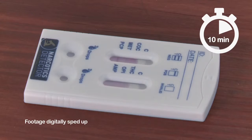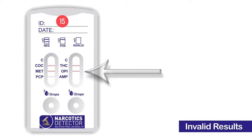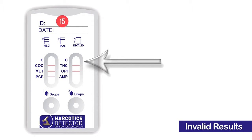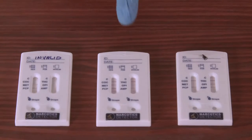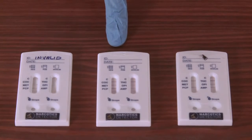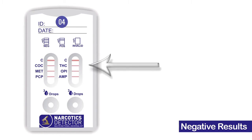I will show you what a positive, a negative, and an invalid test looks like. Although there are lines appearing at the substance test, there are no lines at the control area, which makes this invalid. The second test is an example of a negative test — you see lines appearing at the control area as well as lines at the substance area.